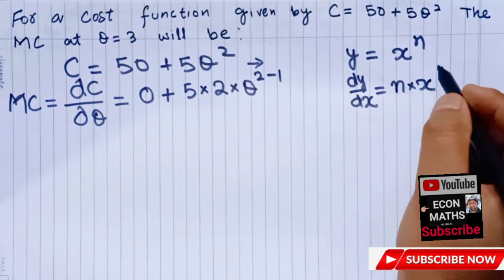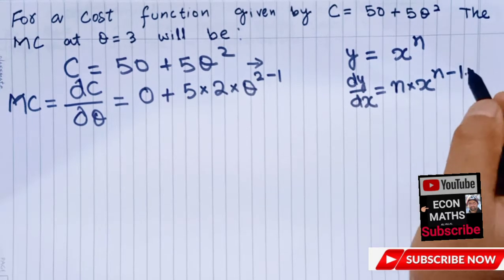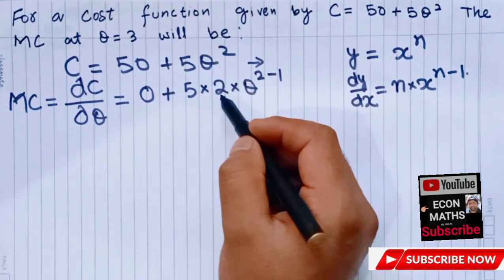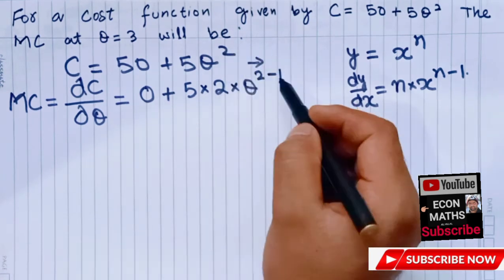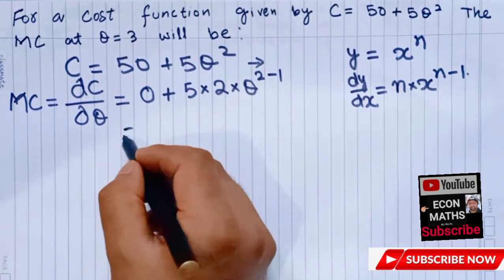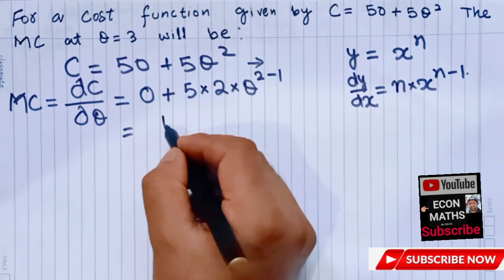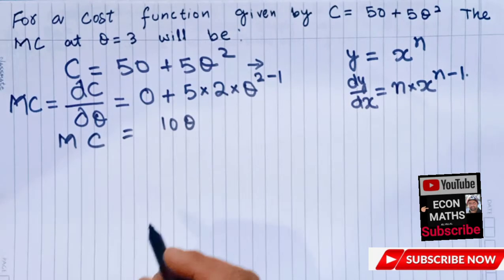This n becomes the coefficient, n times x, and this n is subtracted by 1, that is n minus 1. So here this 2 becomes the coefficient, multiplied with this Q, and this 2 is subtracted by minus 1. So we get 2 times 5 times Q, that is 10Q.